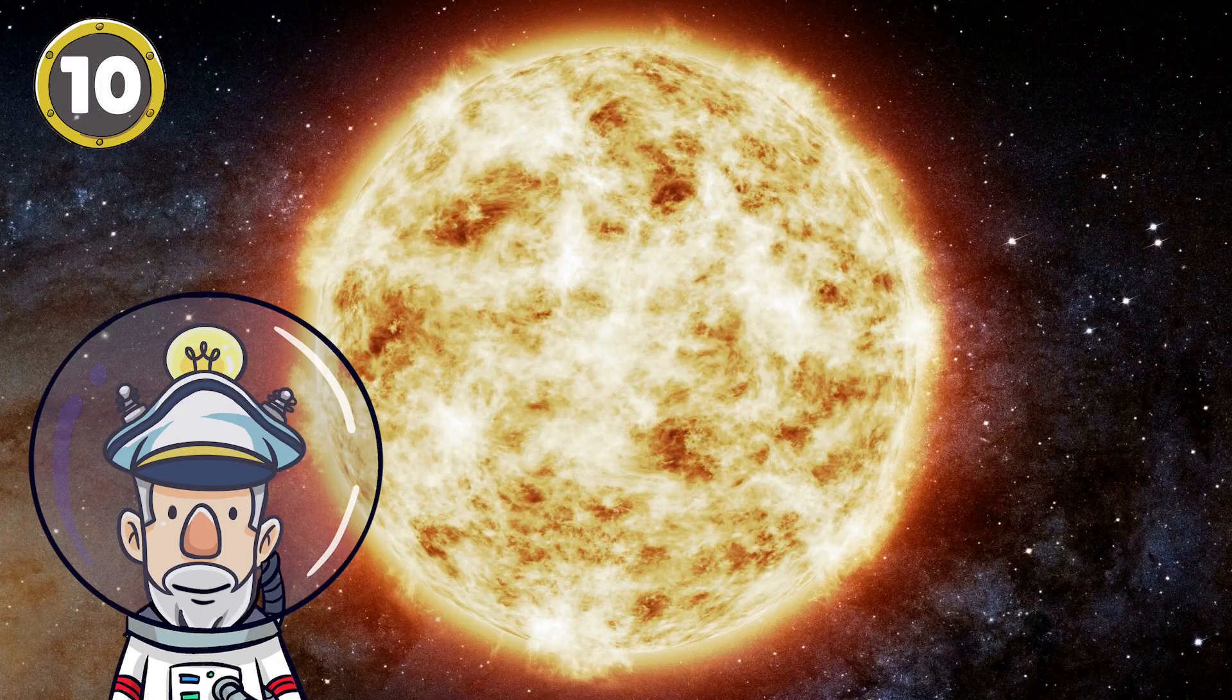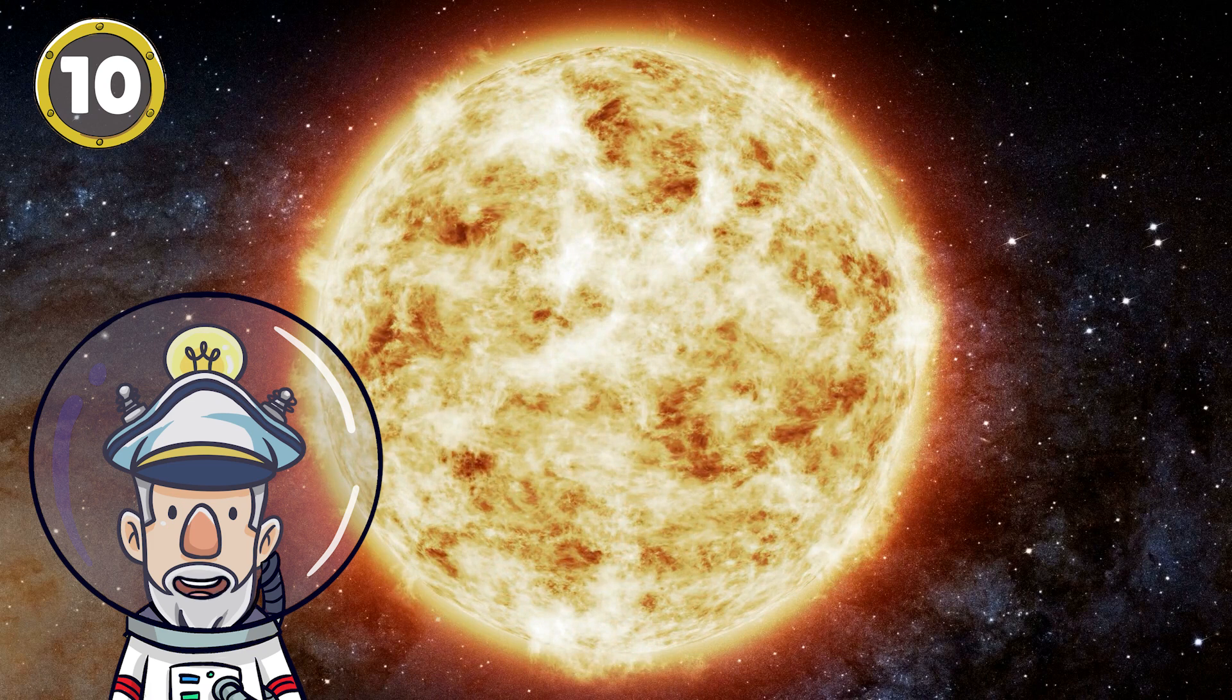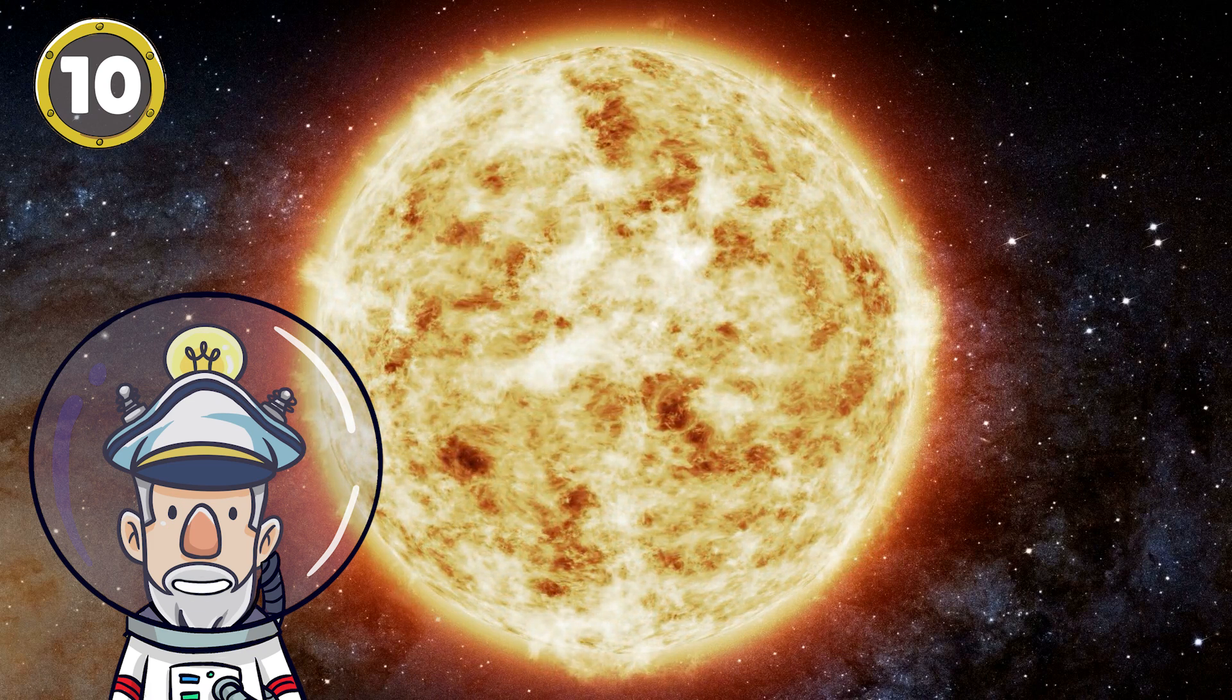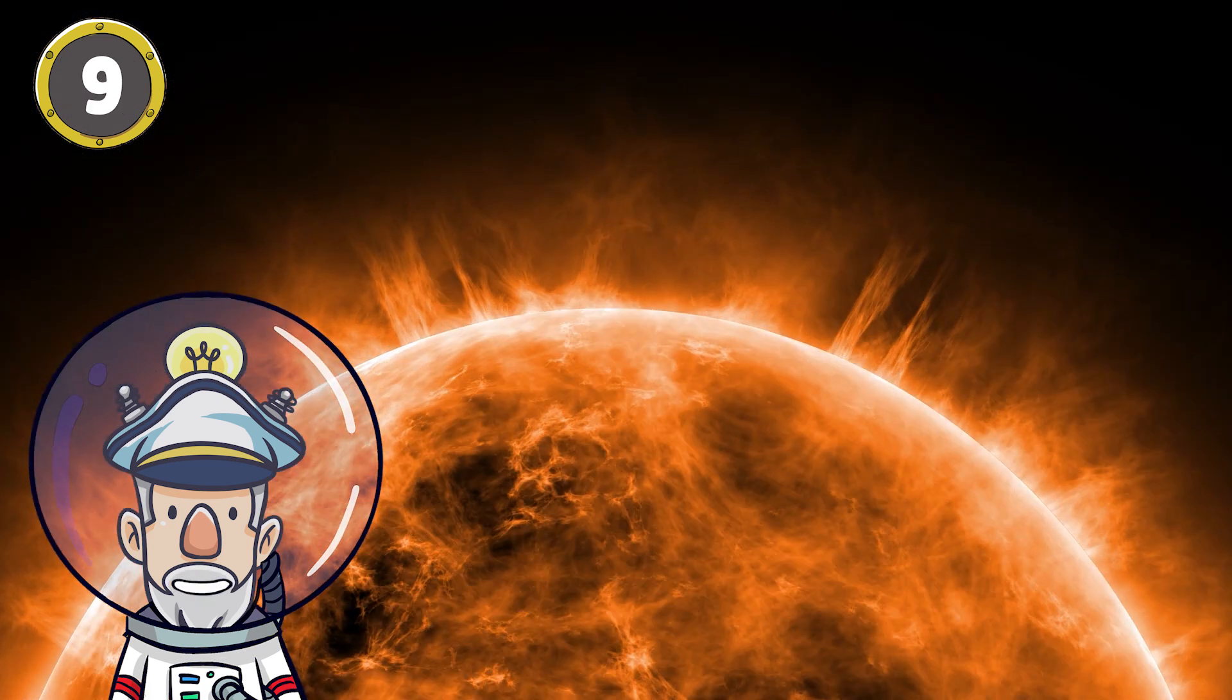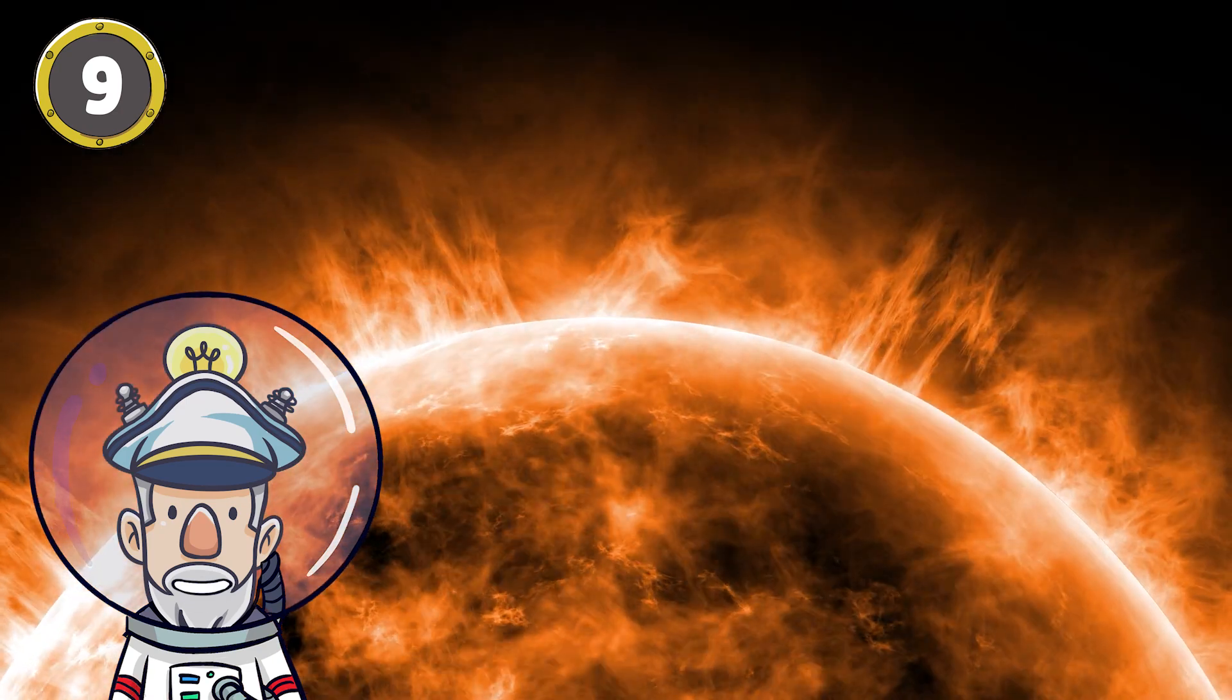Number 10: The Sun accounts for 99.86% of the mass in the solar system. Number 9: It's the most important source of energy for life on Earth.